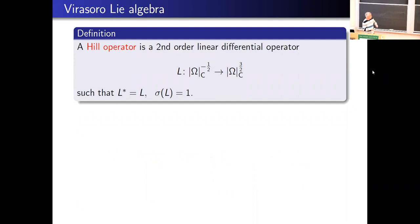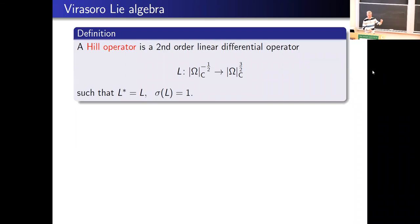A Hill operator is a differential operator from minus-one-half densities to three-halves densities that is self-adjoint and whose principal symbol equals one. This starts making sense when you think about it: for self-adjointness, L and L* must act between the same spaces, giving one condition on the exponents. The symbol of a differential operator is generally a section of the symmetric algebra of the dual, so some density bundle of some order — requiring the symbol to be a function (order zero) forces the degrees to be exactly these.